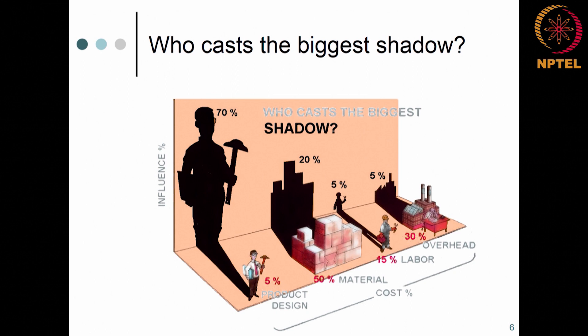Who has the biggest impact? Interestingly, product design has the highest impact at 70 percent, yet the amount of time we spend on it is only 5 percent. Once you go into the material stage, you cannot change your design anymore — it is only the material cost and labour for fixing and fitting things down.